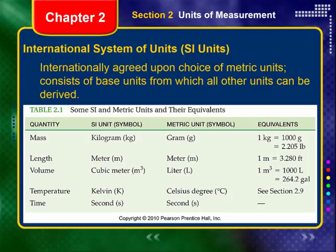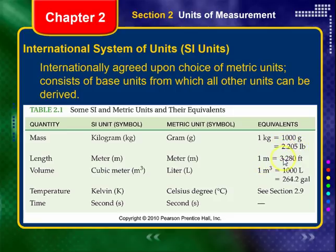The SI system is an internationally agreed-upon choice of metric units consisting of base units from which all other units can be derived — grams, meters, liters, degrees Celsius, and seconds. Key statements of equality: one kilogram equals 1,000 grams; one kilogram equals 2.205 pounds; one meter equals 3.280 feet; one cubic meter equals 1,000 liters, or 264.2 gallons. Remember this slide — these may be useful for problems you work.